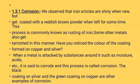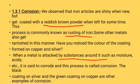Our next topic is corrosion. We observe that iron articles are shiny when new but get coated with a reddish-brown powder when left for some time. This process is commonly known as rusting of iron. Iron and some other metals also get tarnished in this manner. When a metal is attacked by substances around it — such as moisture, acids, etc. — it is said to corrode, and this process is called corrosion.